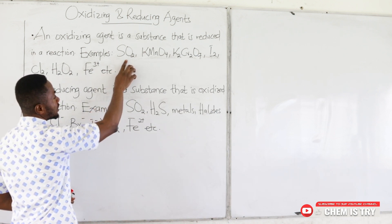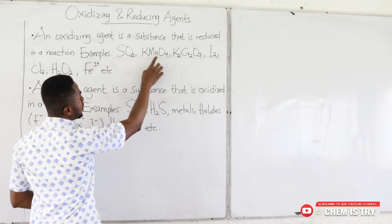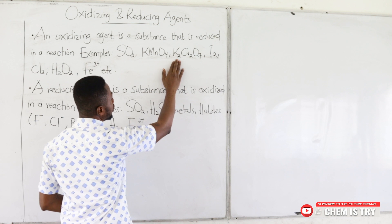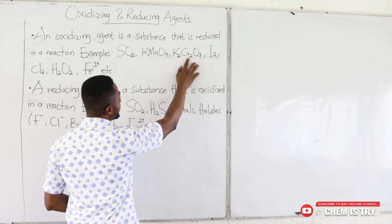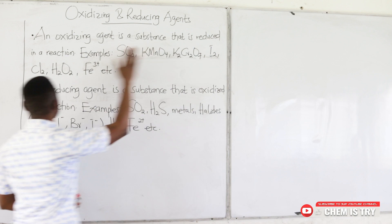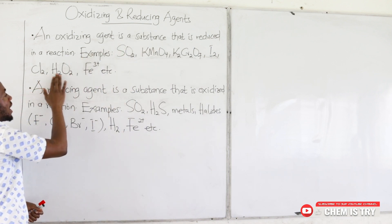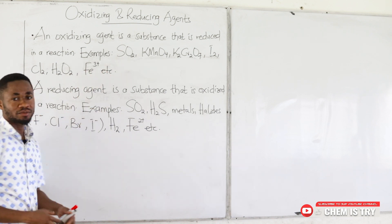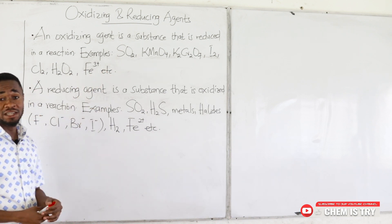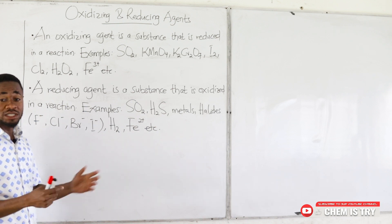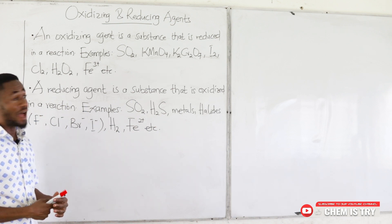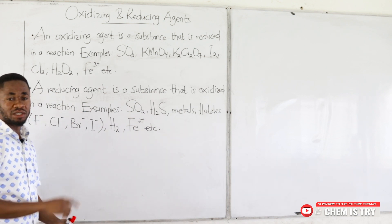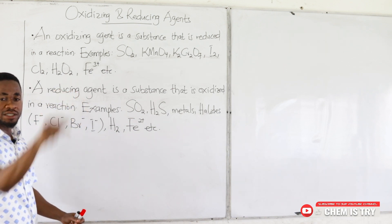We have many oxidizing agents. Examples include sulfur dioxide (SO₂), potassium permanganate (KMnO₄), potassium dichromate (K₂Cr₂O₇), iodine, chlorine, hydrogen peroxide, Fe³⁺, and others. Whenever you see them in a reaction, chances are they are undergoing reduction — meaning their oxidation number is going down.